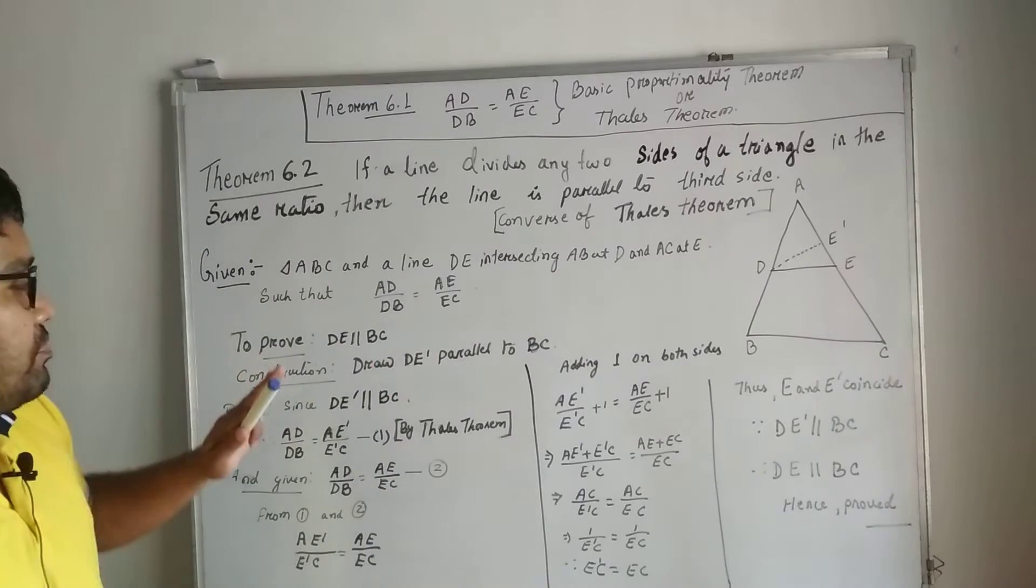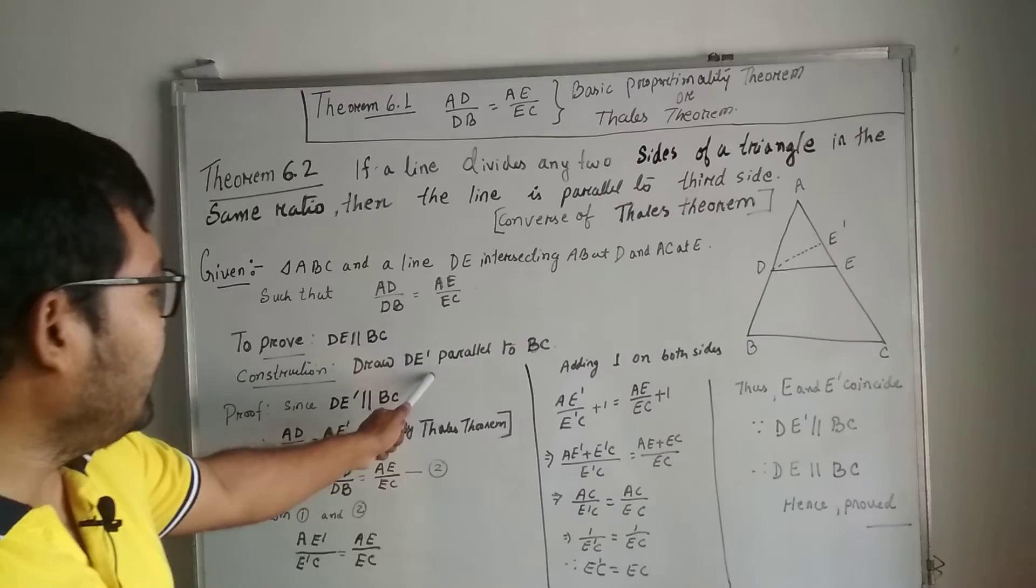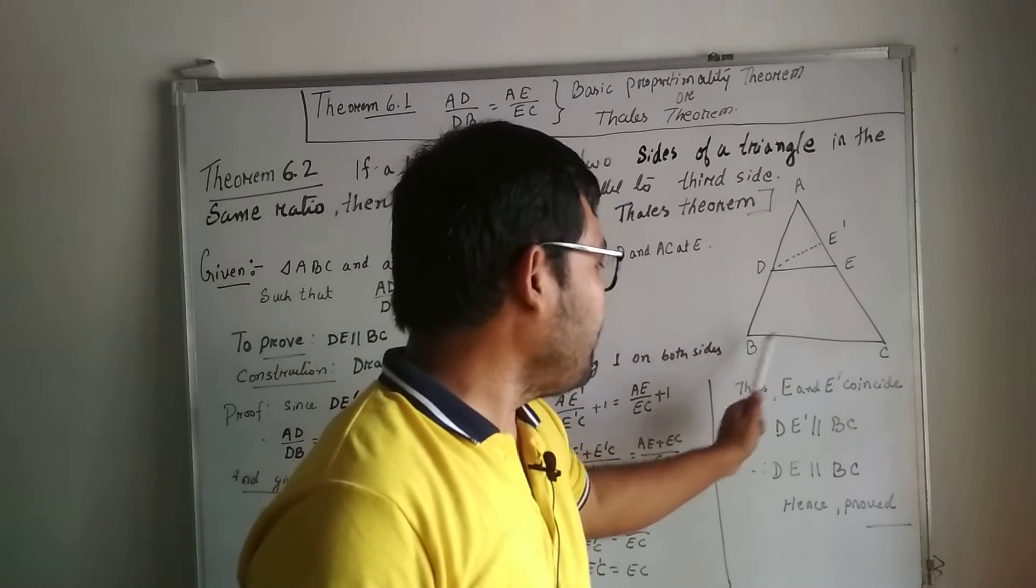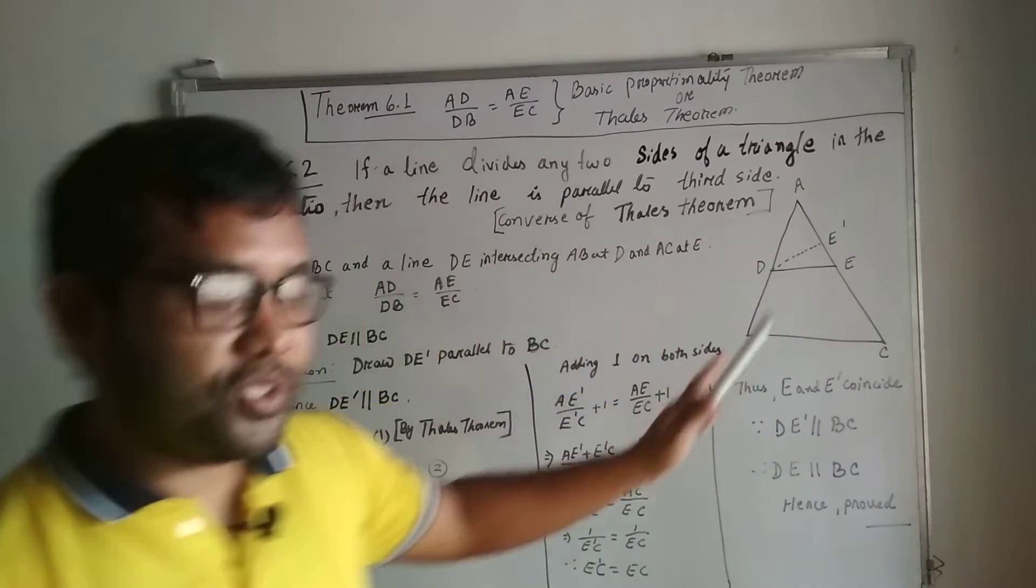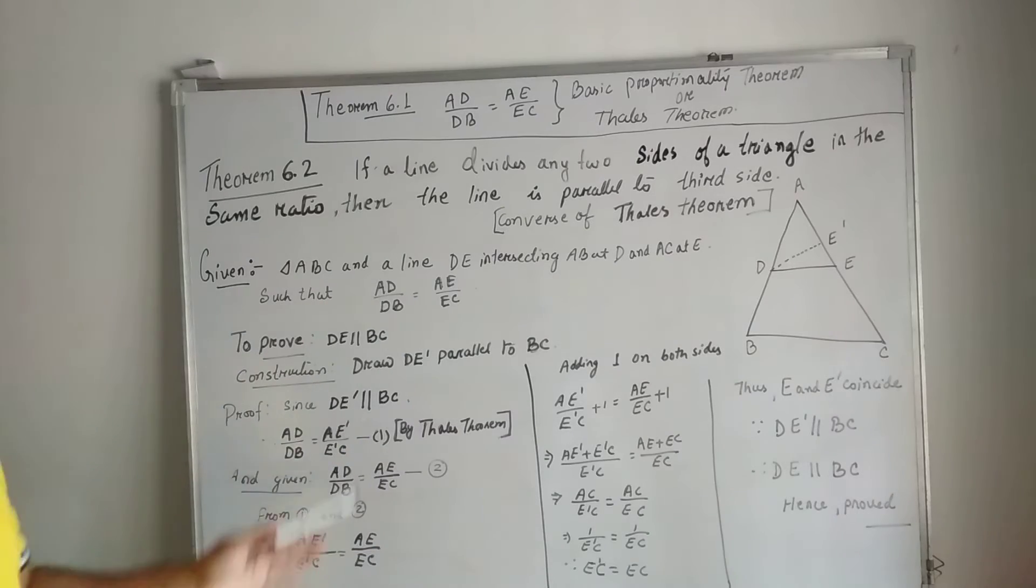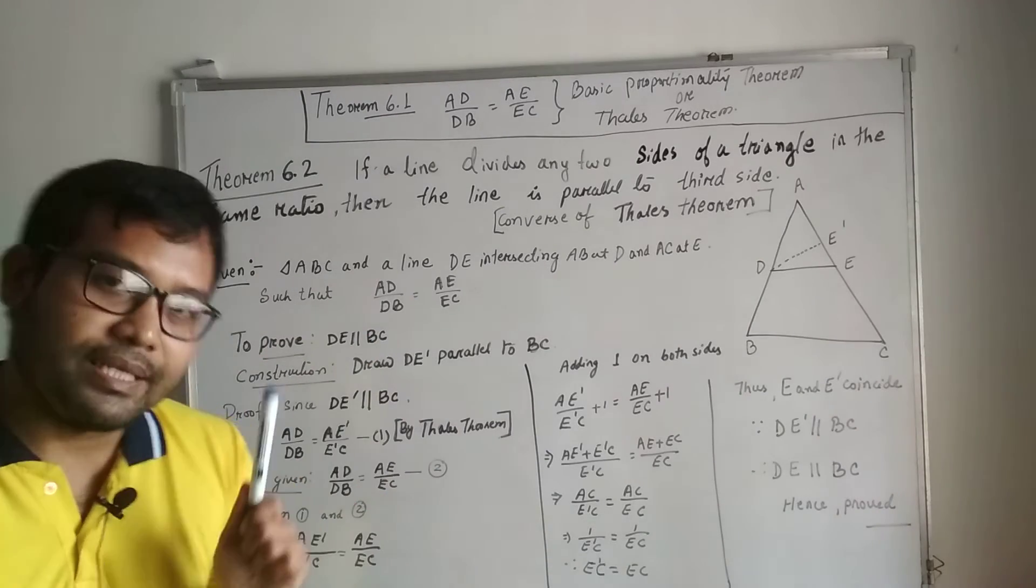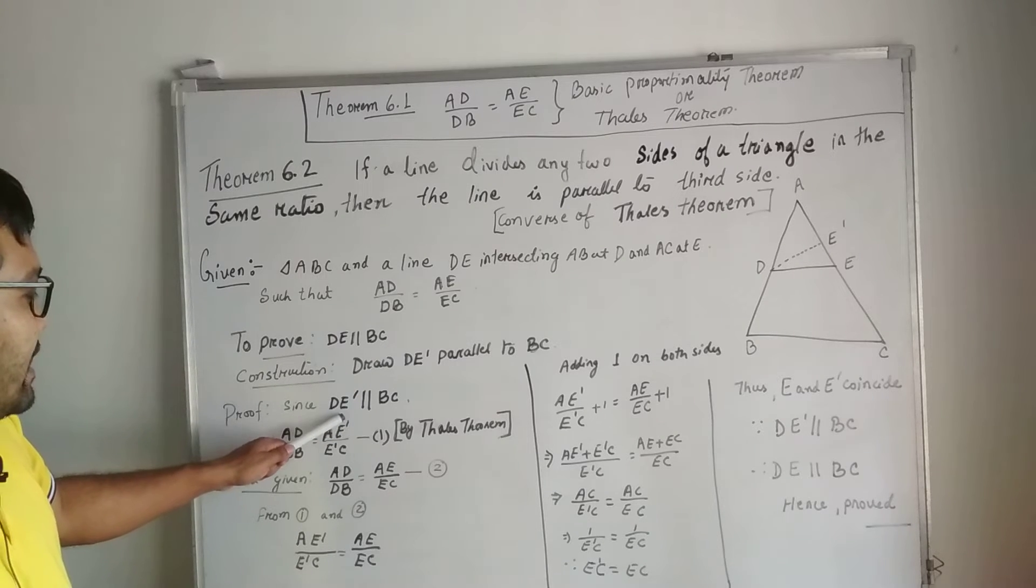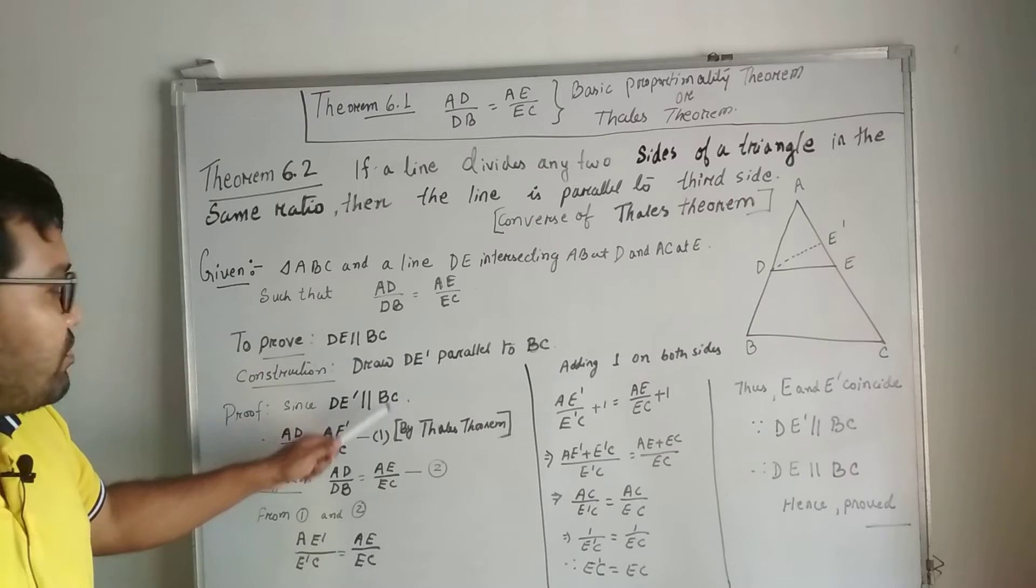To prove DE parallel to BC. We are assuming or we are considering, for construction, that DE' is parallel to BC. So finally now we will prove that they coincide.